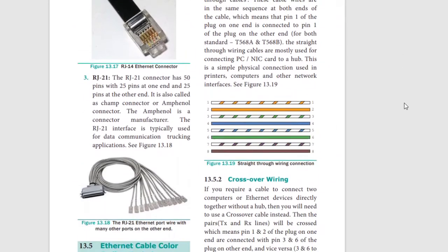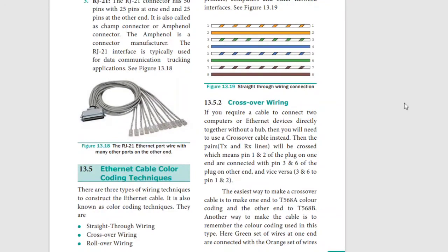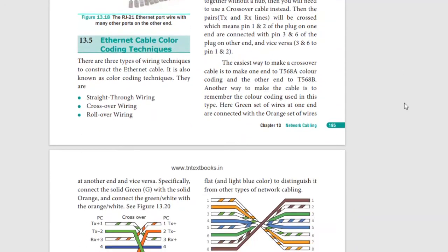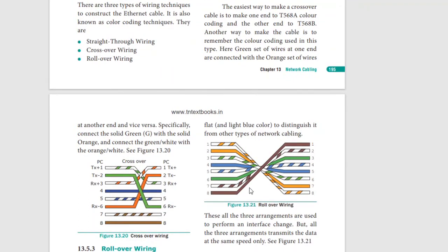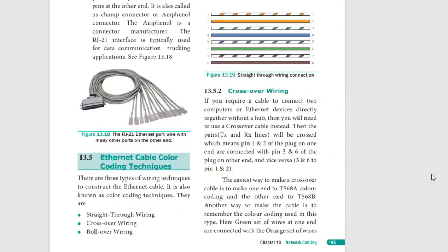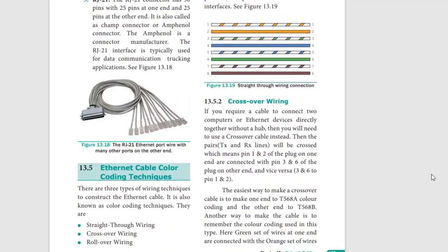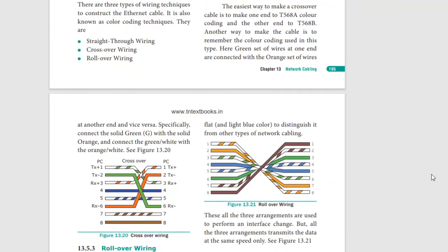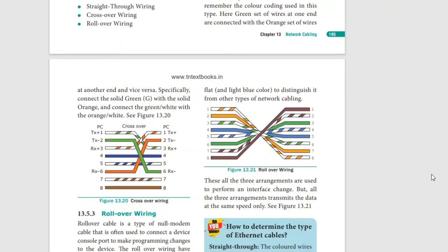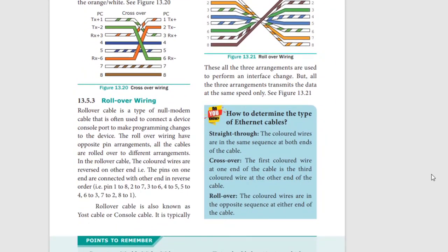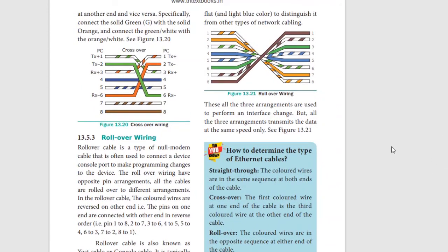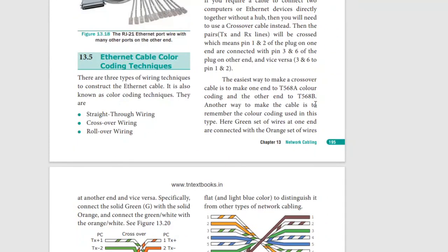Next, Ethernet cables color coding: straight-through wire, normally straight up; next crossed; next rollover. These are the kinds of connections. First, straight cables - where the connections go straight through. Then crossover cables - used in laboratory computer cabling. And rollover wiring - how do you use this? This is the structure.